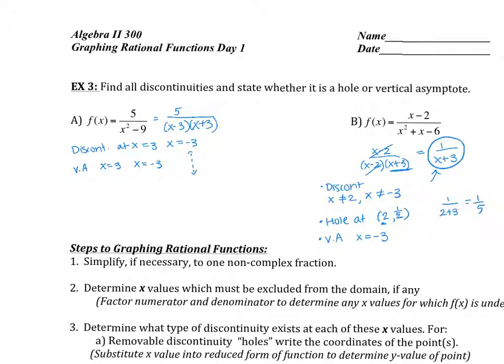To recap: to identify your discontinuities, look at your denominator and see what values make it 0. If you have a factor that cancels in the numerator and the denominator, that tells you there's going to be a hole in the graph. Any other values left in the denominator that would make the denominator 0 are your vertical asymptotes.